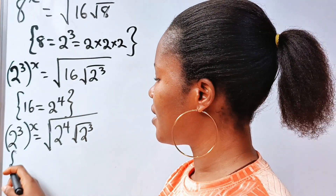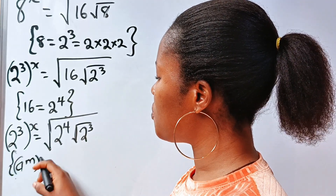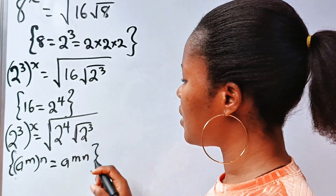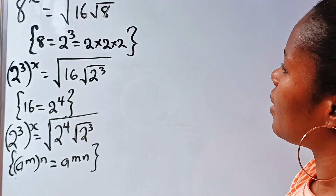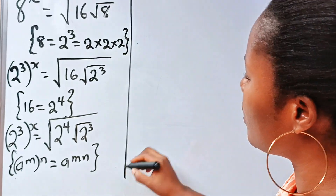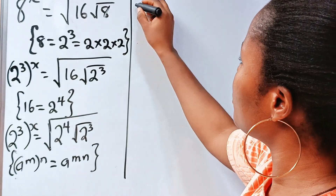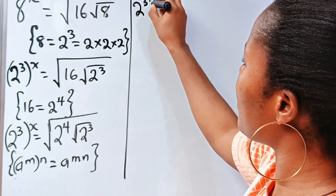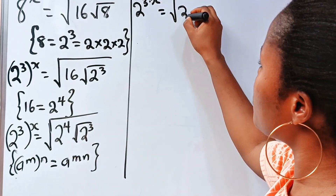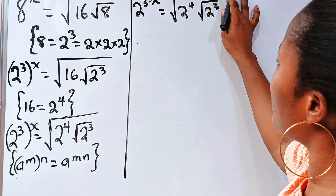Now note that a to the power of m raised to the power of n is equal to a to the power of m times n. That means we can write this as 2 to the power of 3 multiplied by x, is equal to the square root of 2 to the power of 4 times the square root of 2 to the power of 3.